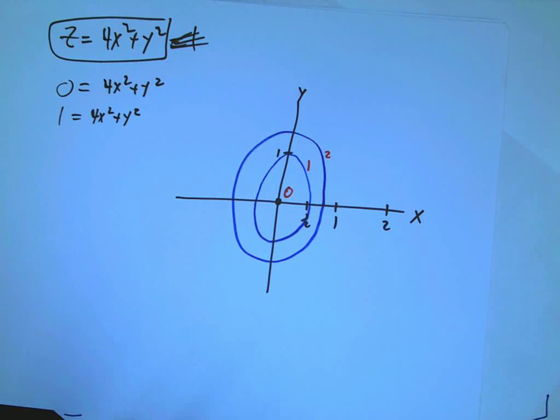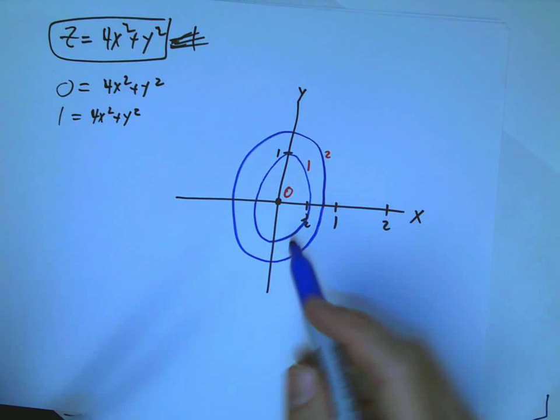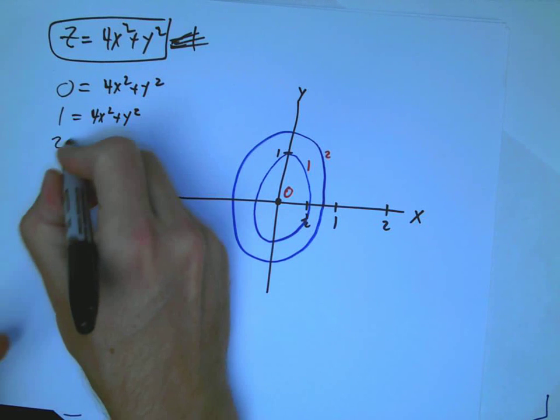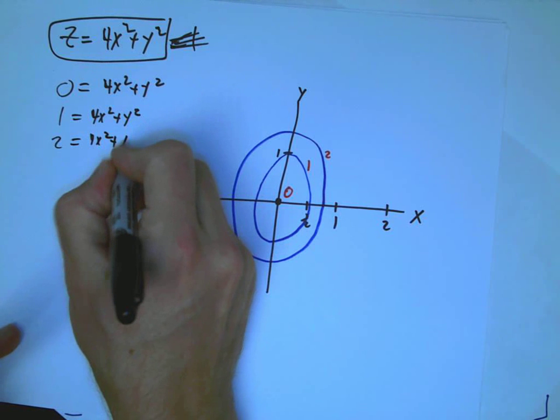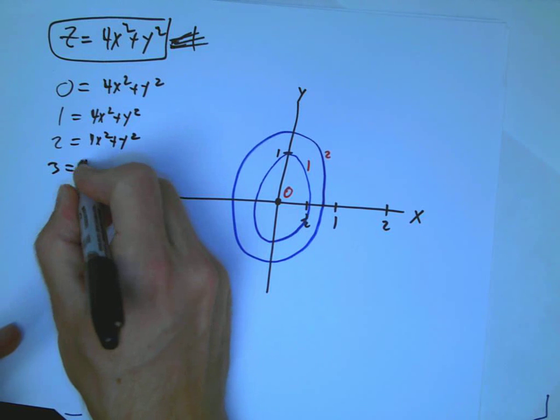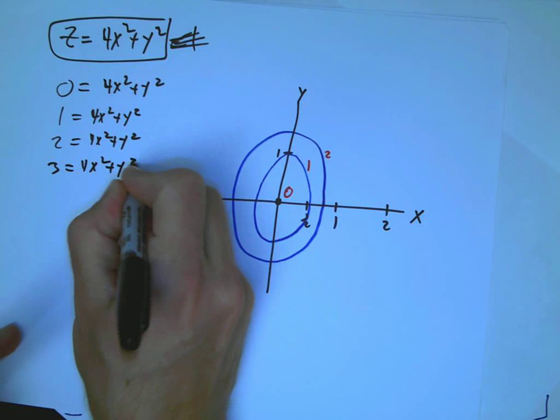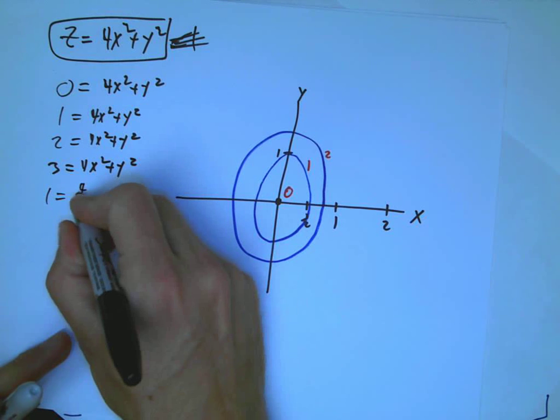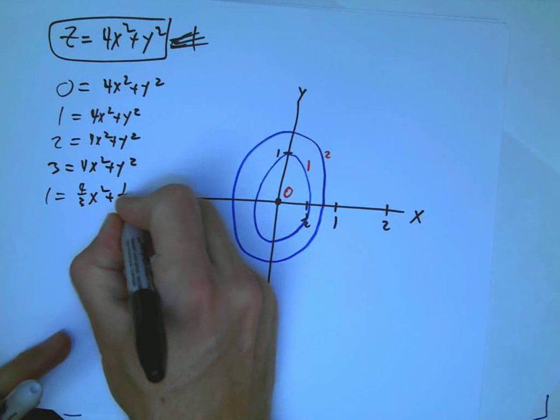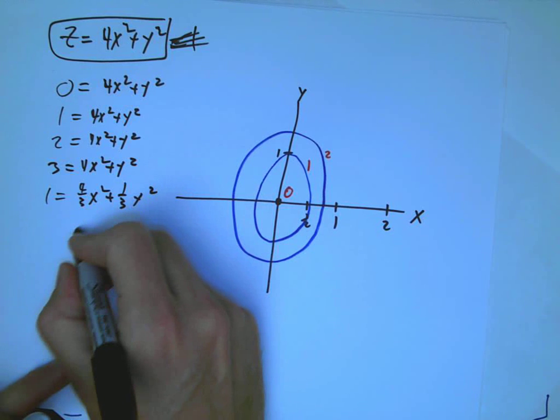And then 3, so let's write that down. That was 2 equals 4x squared plus y squared. 3 equals 4x squared plus y squared. So that's 1 equals 4 thirds x squared plus 1 third y squared.